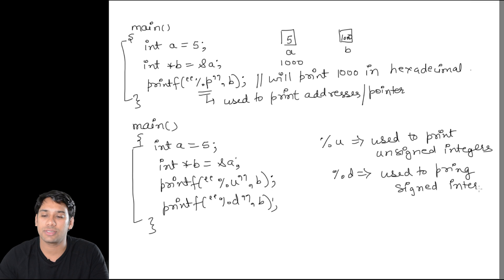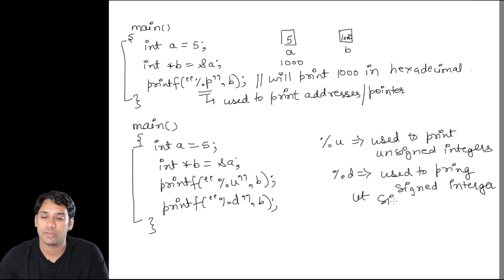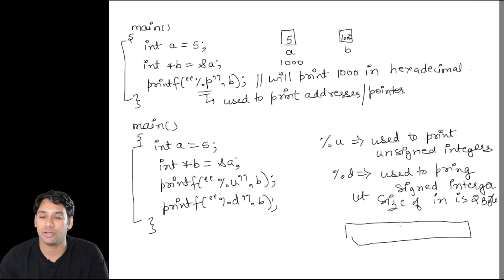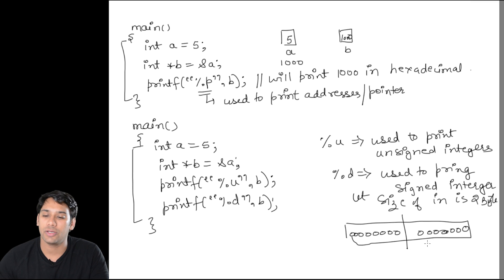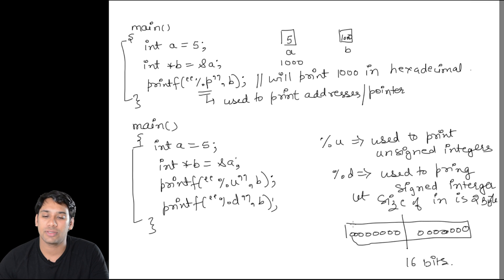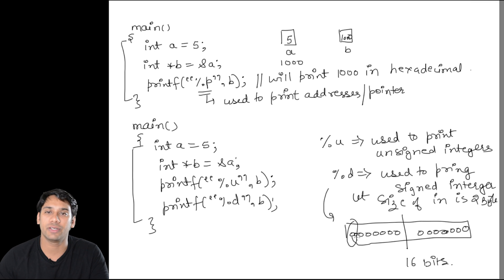In some computers the size of integer is 4 bytes and in some other systems the size of int is 2 bytes. If the size of int is 2 bytes, that means we have a total of 16 bits. In case of signed integers, the last bit is used to tell whether the number is positive or negative.